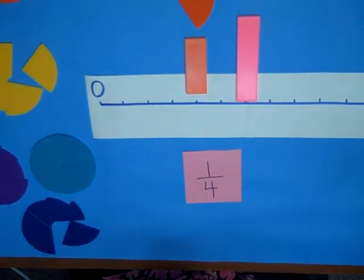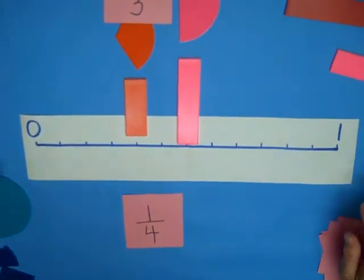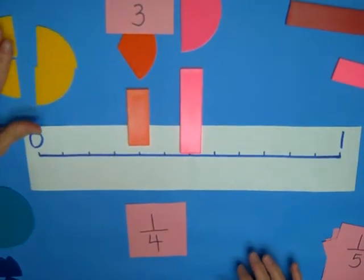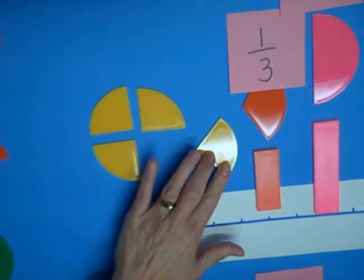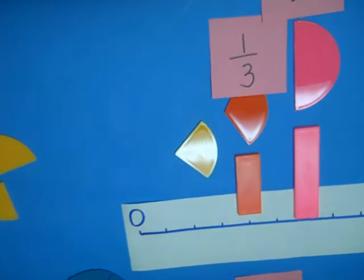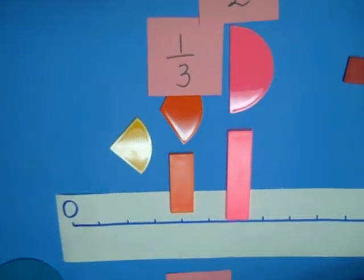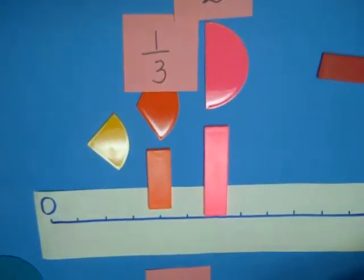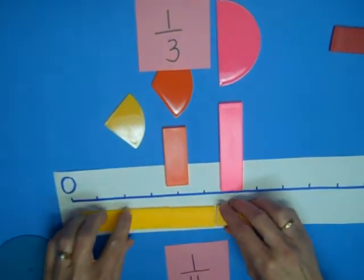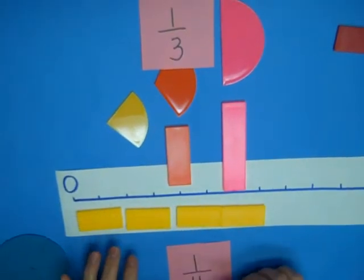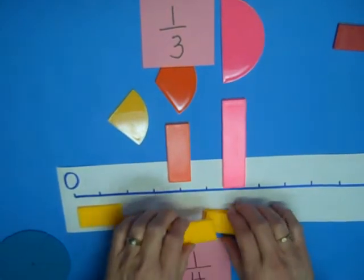Now, our next fraction is a quarter or a fourth. And here's my fraction circle cut into four pieces. So, here's what that model is going to look like. And here's my strip in four. So, here's what this is going to look like.